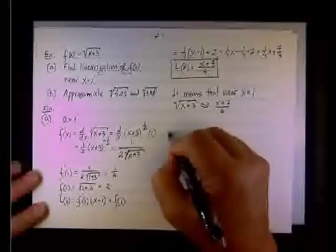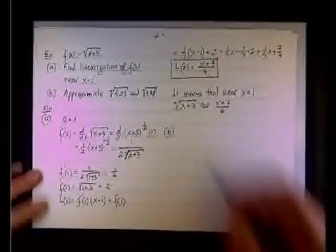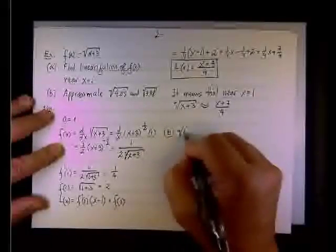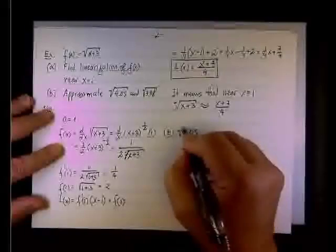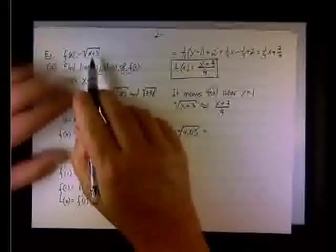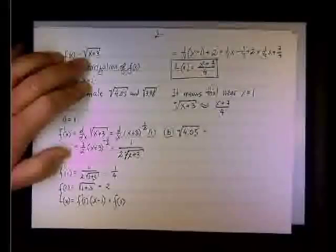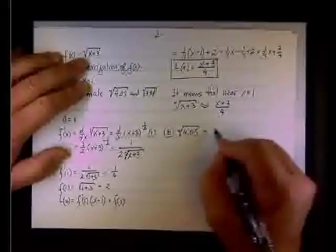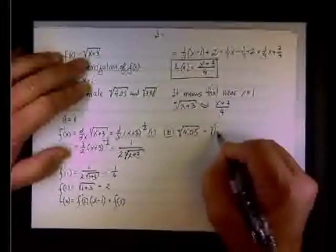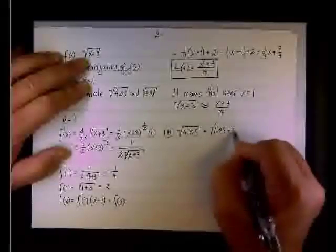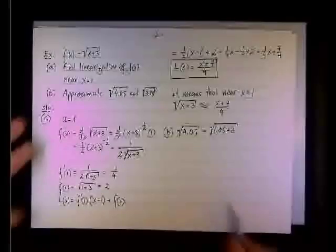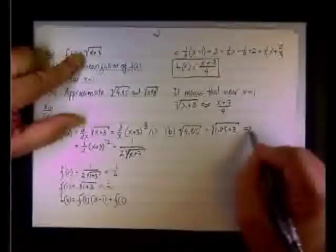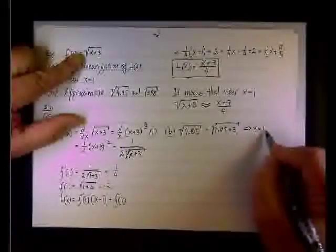And part B demonstrates this advantage. For instance, I want to first calculate or approximate √4.05. Now, I'll need to express it in terms of the square root of x plus 3. So I see that the difference between 4.05 and 3 is 1.05, so I can break it down as 1.05 plus 3. And I compare these two, and I say, okay, in this case, my x is 1.05.